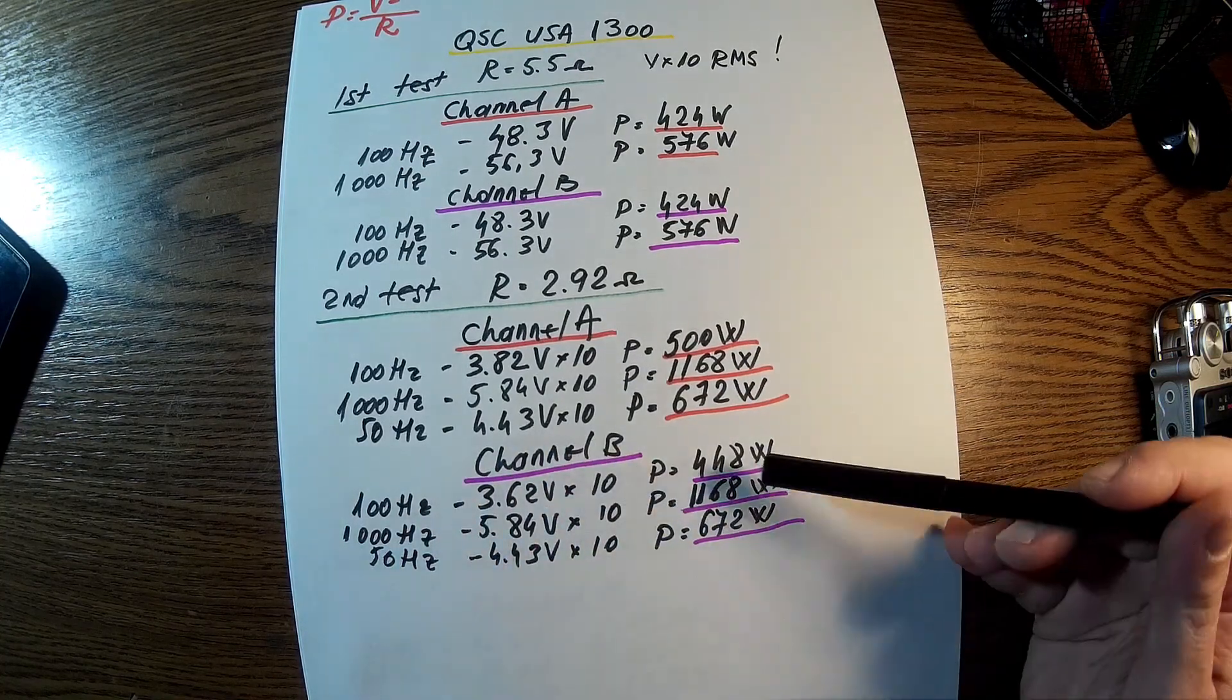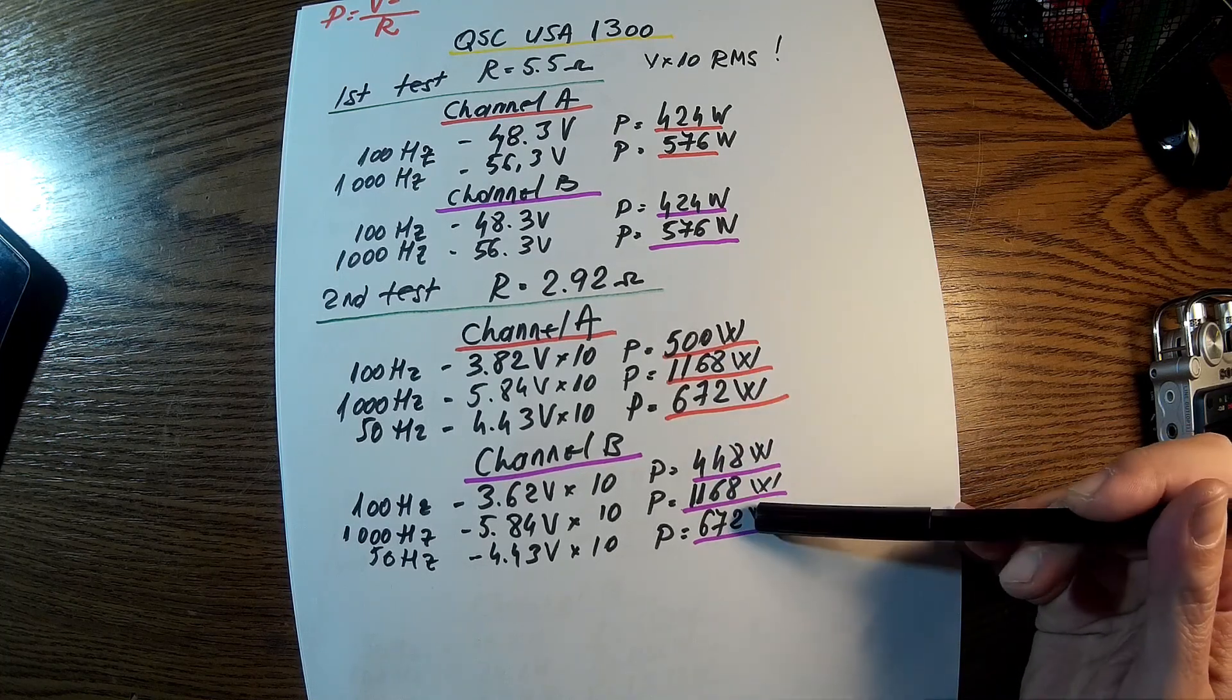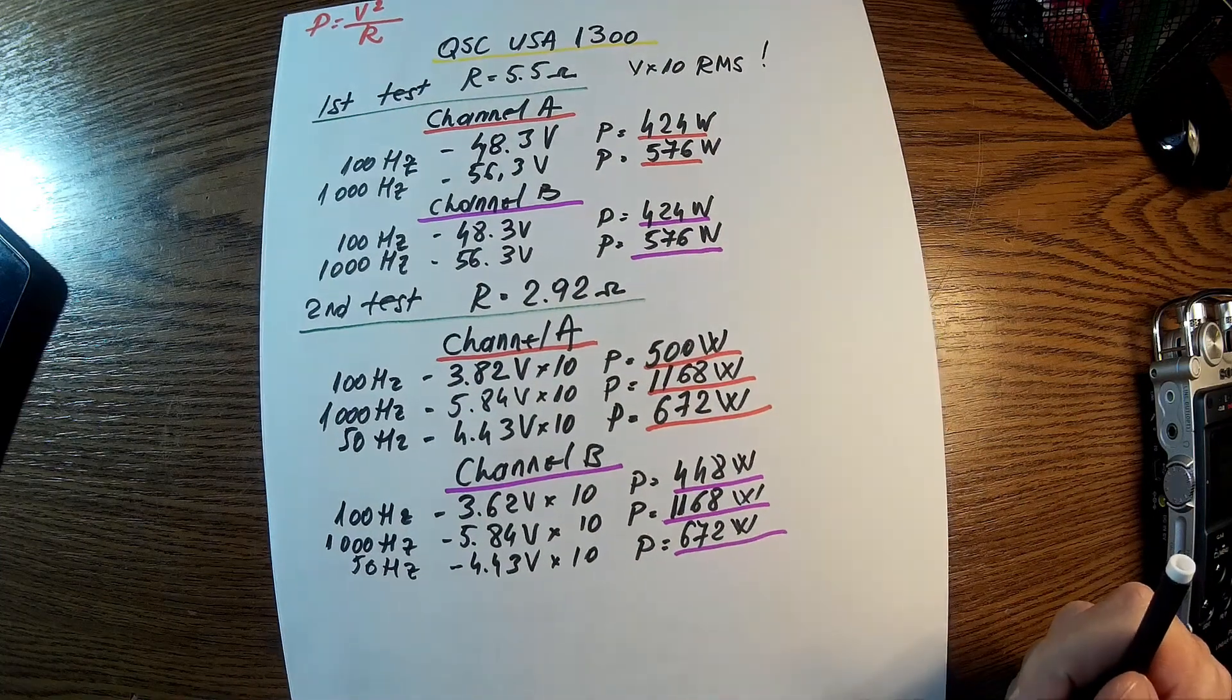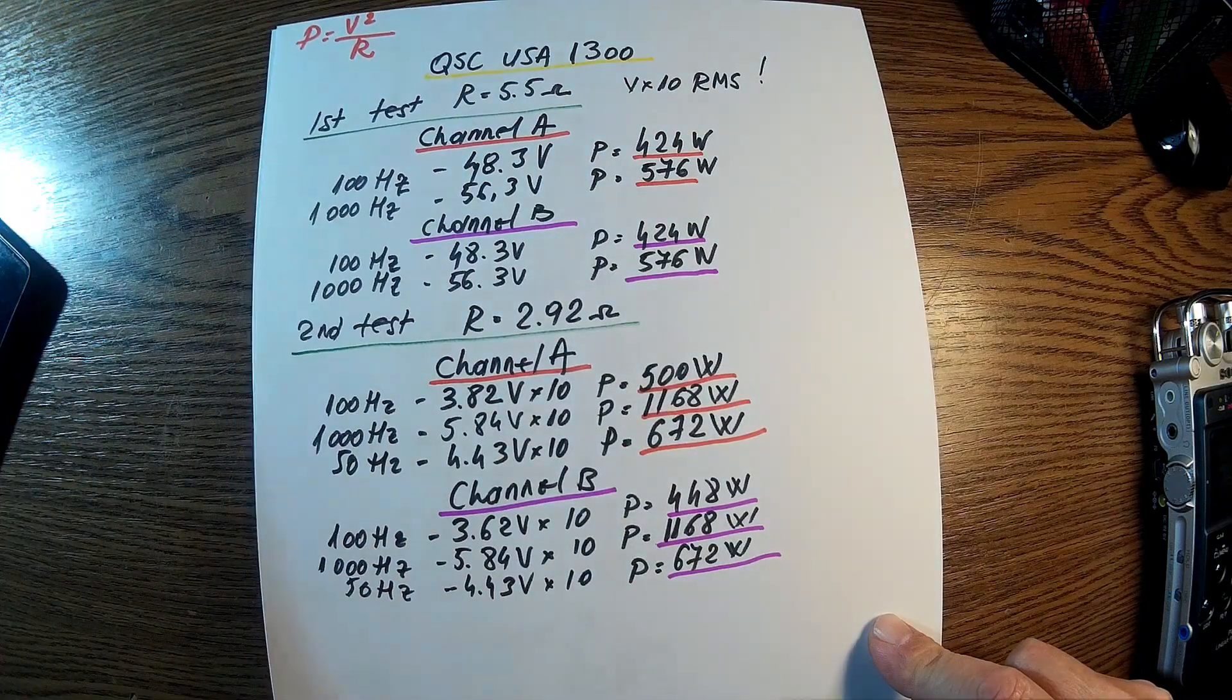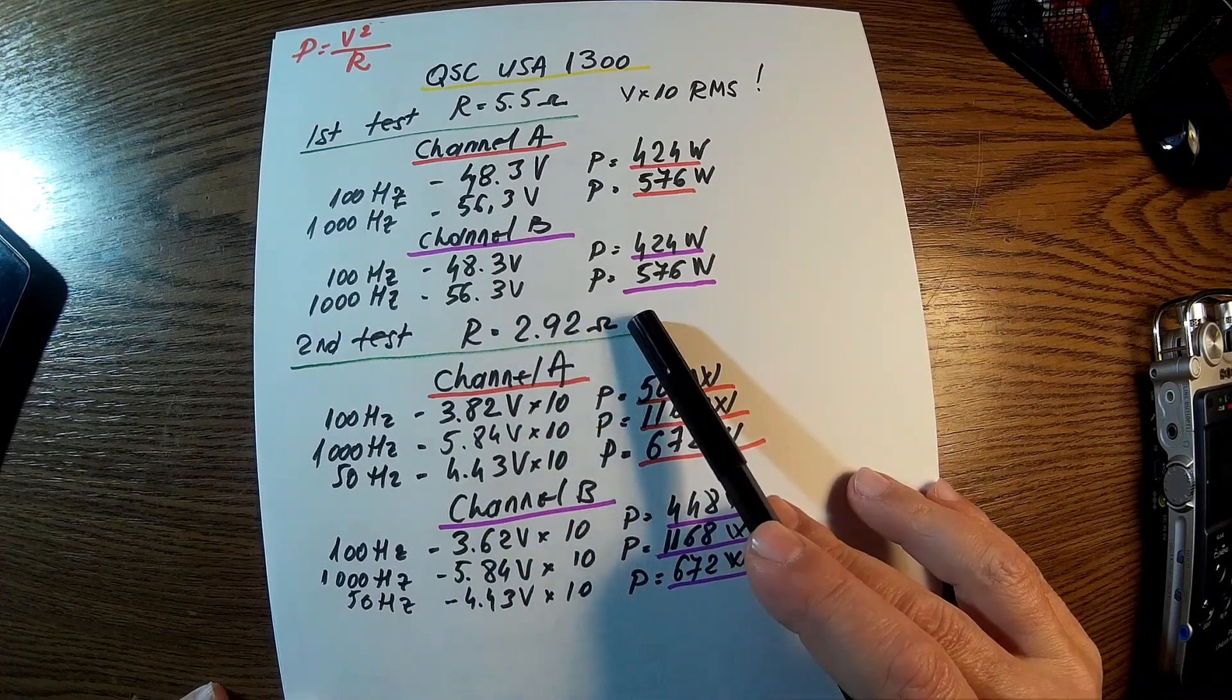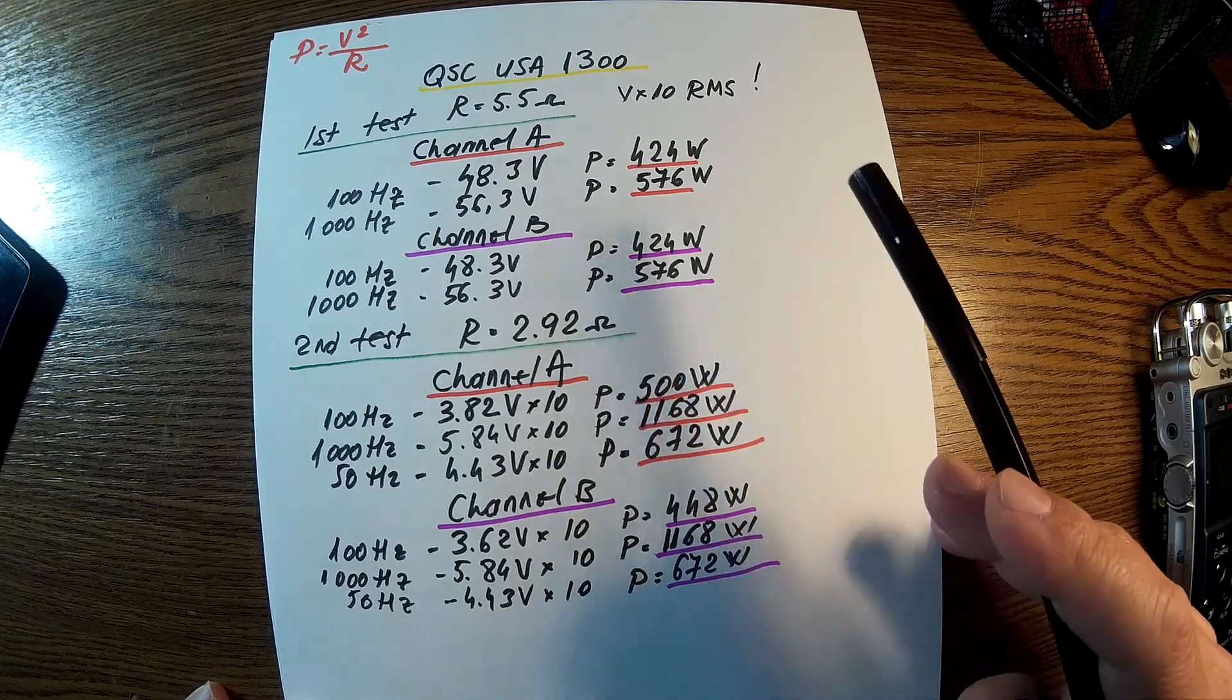Channel B, almost the same. 448. Here is the same, 1000 Hz the same value, and the 50 Hz is the same value too. This one doesn't matter if it's old, but it's working as it should, and all the results are exactly like I expected. Remember this is on 2.92 ohms. We should have 4 ohms here and we should have 2 ohms here.